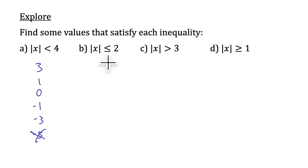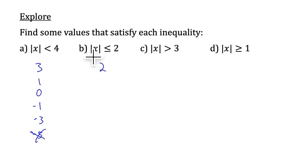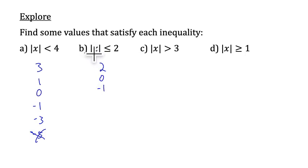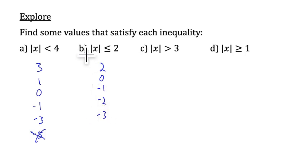Likewise, here we want the absolute value of x to be less than or equal to 2. Notice there is an equal bar here. So 2 works because the absolute value of 2 is less than or equal to 2. Numbers like 1, 0, and negative 1 certainly work — the absolute value of negative 1 equals positive 1, which is less than or equal to 2. And negative 2 also works. But negative 3 does not, because the absolute value of negative 3 is positive 3, which is not less than 2.